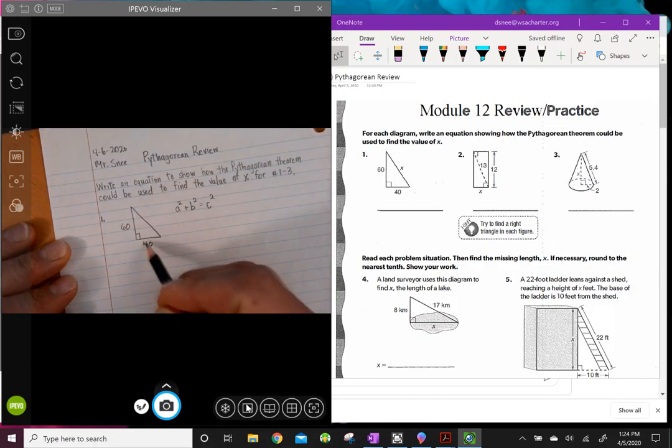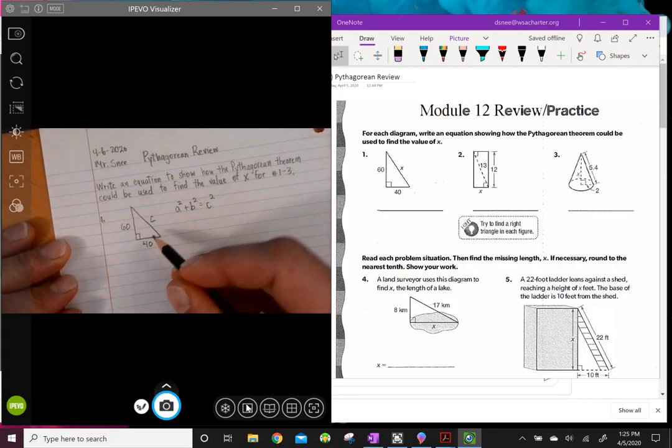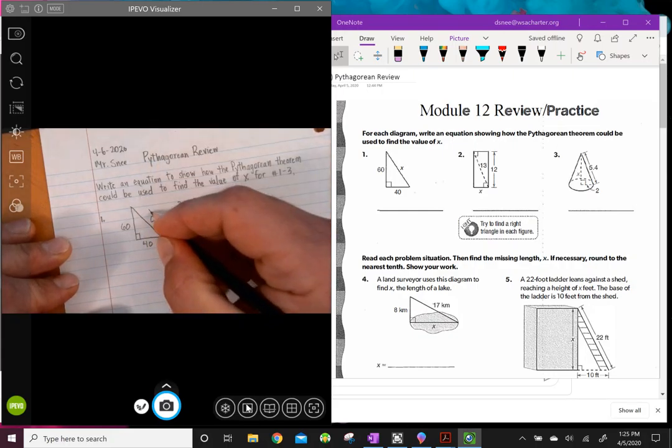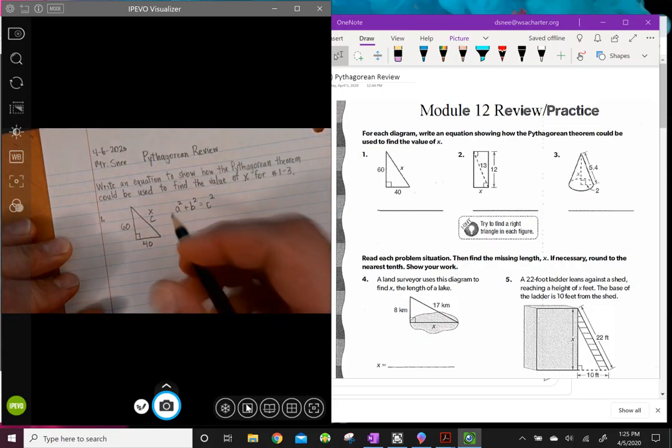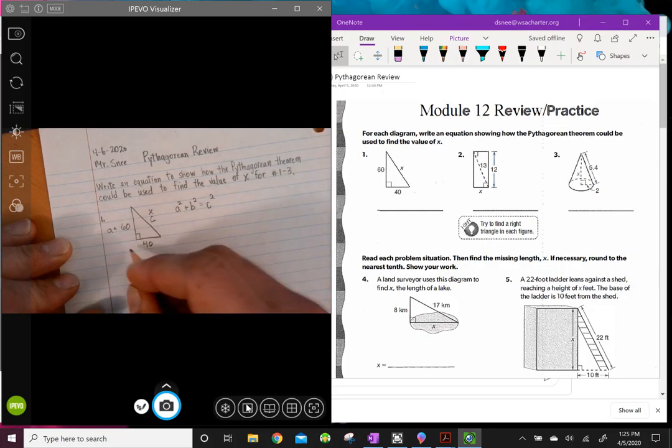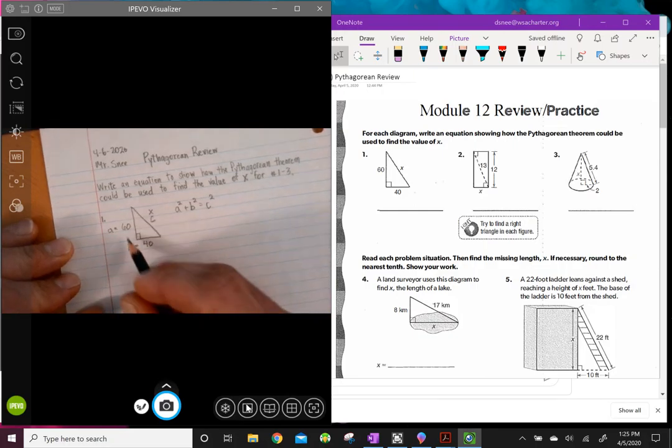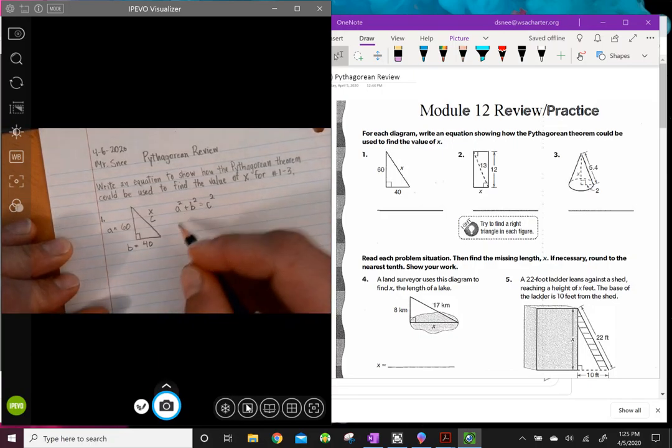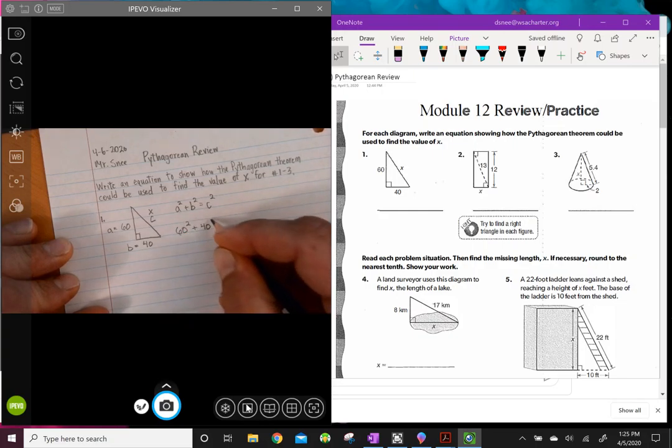that the Pythagorean Theorem again is a squared plus b squared equals c squared, and we know that the legs are a and b, the short sides adjacent to the right angle, and c is the hypotenuse. c is this side over here. Okay, it says write an equation showing how the Pythagorean Theorem could be used to find the value of x. So I just want an equation that shows how I can find the value of x, right, which is c. So I'm going to call this side a, and I'm going to call this side b. It doesn't really matter which one's which. a and b are the legs, and I'm going to substitute those values. So my equation would be 60 squared plus 40 squared equals x squared.